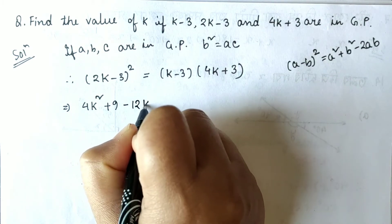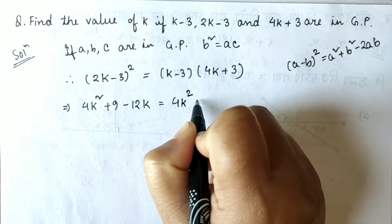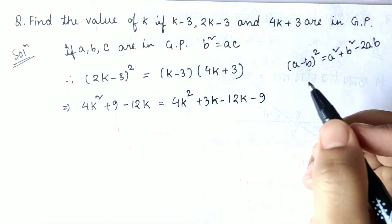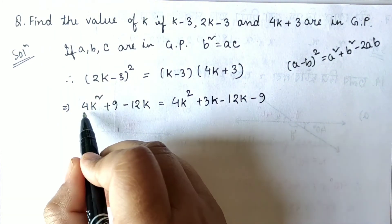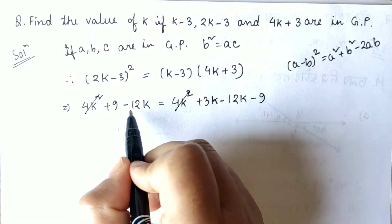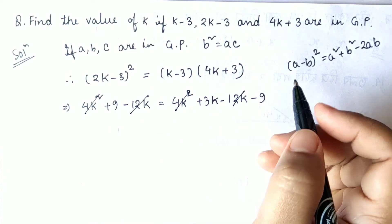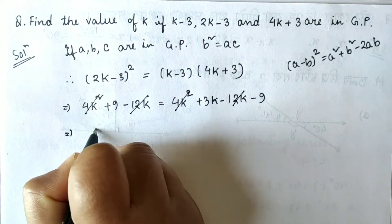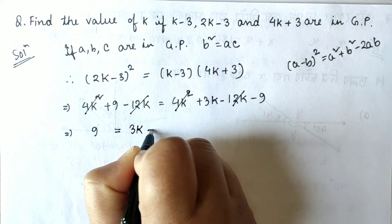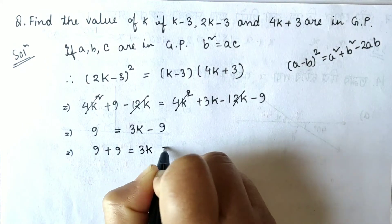The right side expands to 4k squared plus 3k minus 12k minus 9. Now 4k squared appears on both sides, so we cancel it. Similarly, minus 12k appears on both sides and cancels out. The remaining left-hand side is 9, giving us 9 equals 3k minus 9.